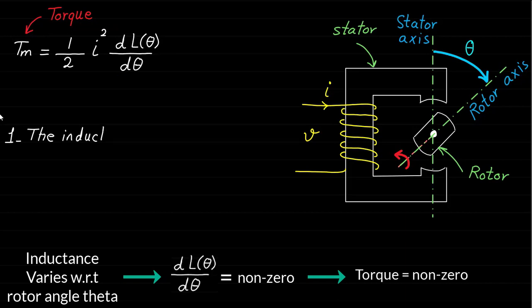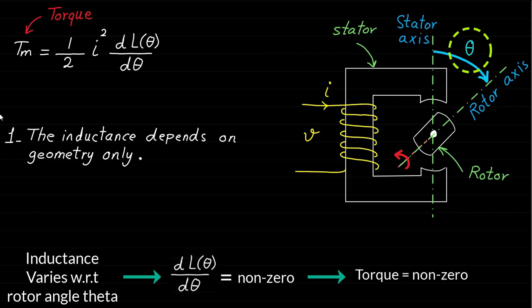In a linear magnetic system, the inductance depends on the geometry of the magnetic circuit only. In other words, if the magnetic material saturation is ignored, the inductance depends on the geometry only. The inductance is represented by L(θ) to show that the rotor angle theta is the only factor that can change the geometry and therefore the inductance of the magnetic circuit.